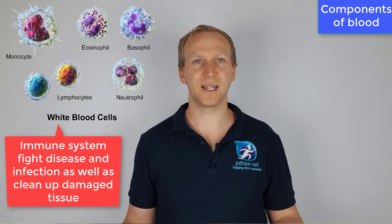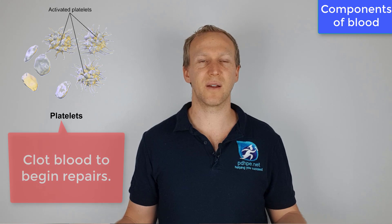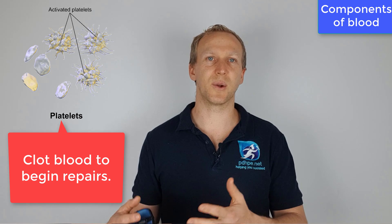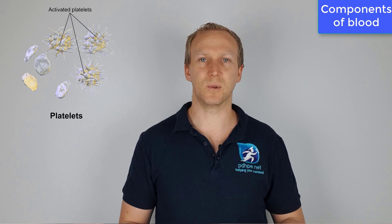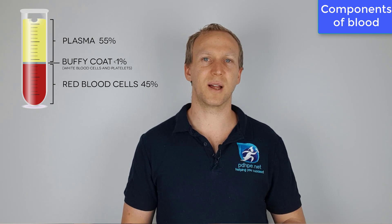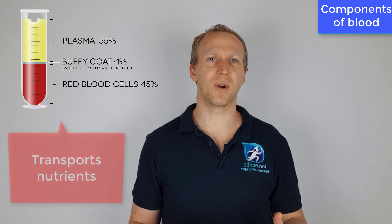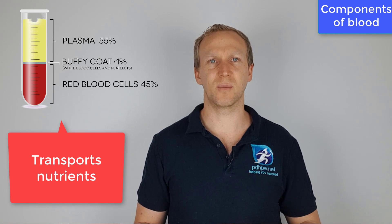Thrombocytes, better known as platelets, are responsible for clotting your blood. Whenever there is a break in a blood vessel, the platelets will provide the clot and help begin the repairing process. Then we have plasma, which is the largest section of your blood. It is a mixture of water and protein, and is essentially responsible for the transportation of most nutrients — oxygen, sugars, and other things moving around in your blood.